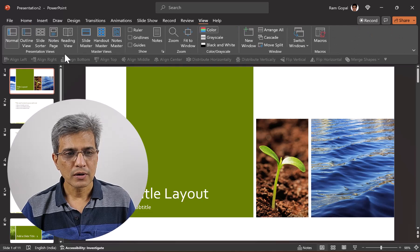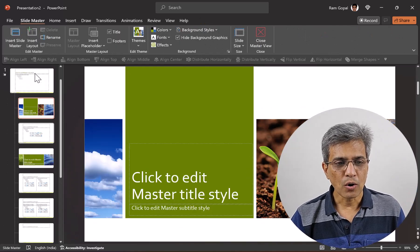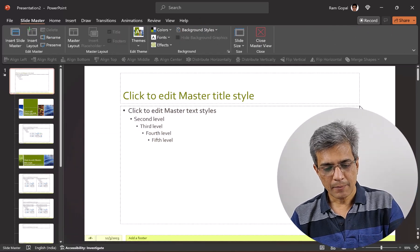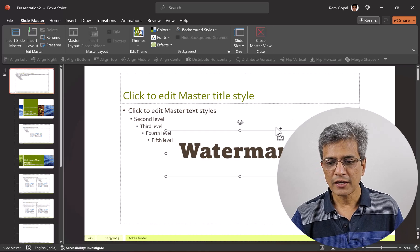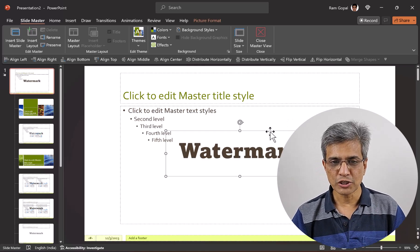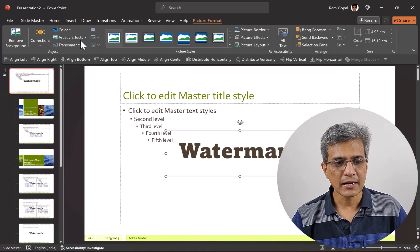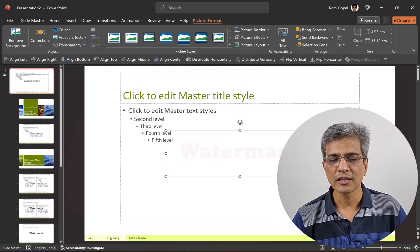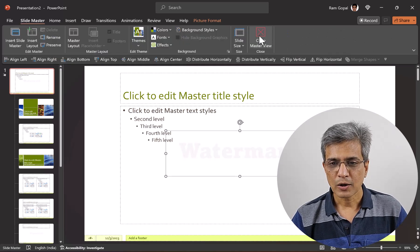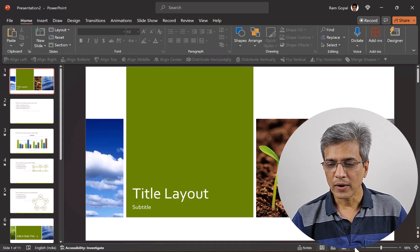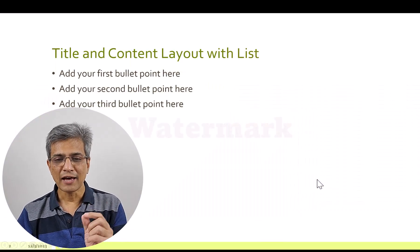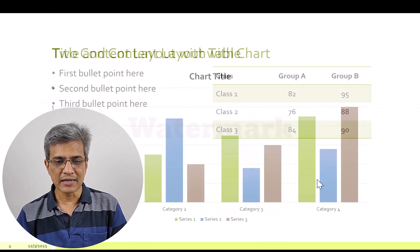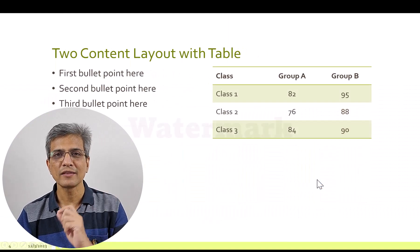Go to View, then Slide Master, and go all the way to the theme slide master. Press Ctrl+V to paste, decide where you want it positioned, then go to Picture Format, go to Transparency, and increase the transparency all the way to 95%. Go to Slide Master and close master view. Now when I go to Slide Show, on every slide we have this watermark available in a discreet way in the background.